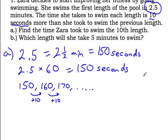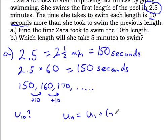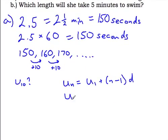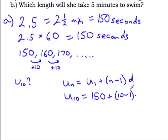It says find the time Zara took to swim the 10th length, so the question is really asking: what is u₁₀, the 10th term in this sequence? We can use our formula: u_n equals u₁ plus (n minus 1) times the common difference. We're looking for u₁₀: that's 150 plus (10 minus 1) times the common difference, which is 10.